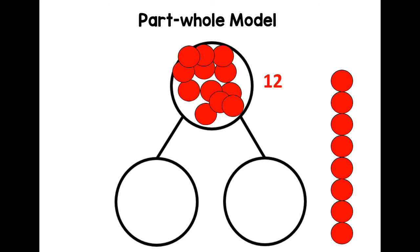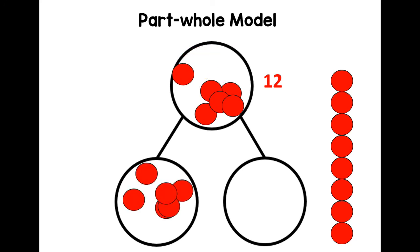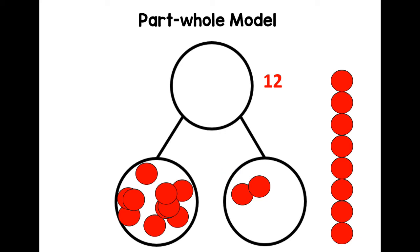So then you can move your counters into the other parts, into the other circles, the two parts, and they will give you numbers that add together to make 12. But when we do number of the day on here, we always put 10 as one part, and then that leaves two as the other.